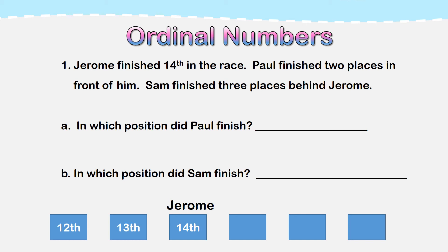The two places in front of Jerome are 13th and 12th, so I know that Paul is in the 12th position. The three boxes behind Jerome are 15th, 16th, and 17th, so I know that Sam is in the 17th position.